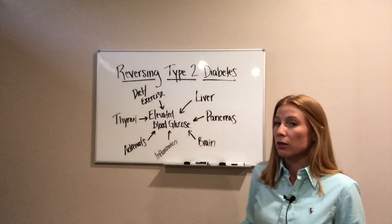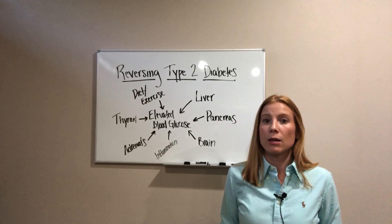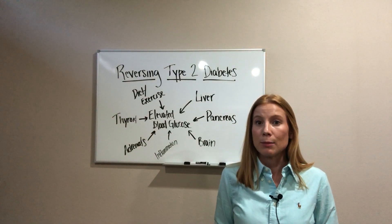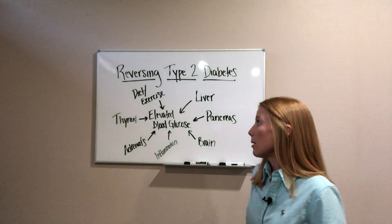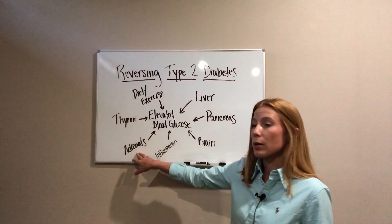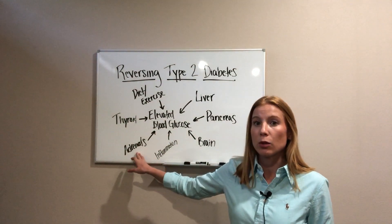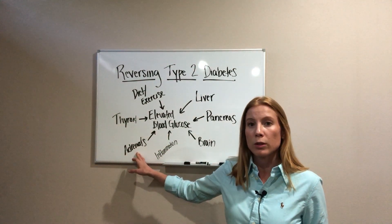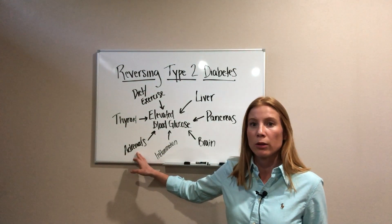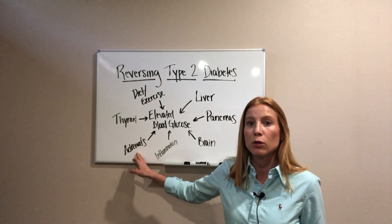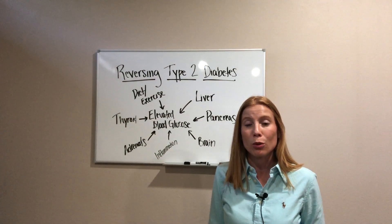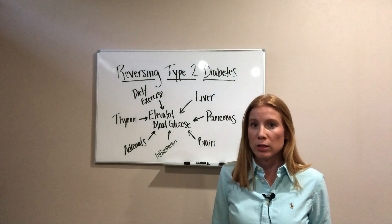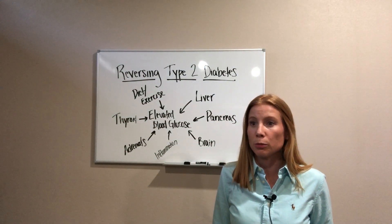There are several organs that play a huge part in type 2 diabetes. Your adrenal glands push out cortisol during stress or other issues, and if you are having problems with cortisol it is very, very difficult to control your blood sugar.